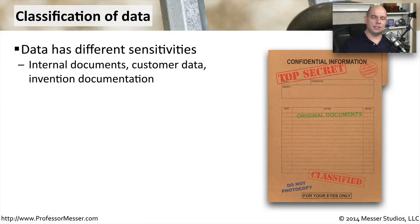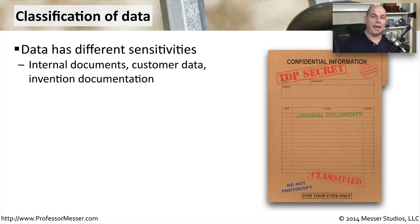Not all data has the same sensitivity. There's a big difference between publicly available data that you might find on the internet and personal private information that you might keep close to home. In fact, internal documents, customer data, and inventions that might be used to patent information all may have different sensitivities associated with them.